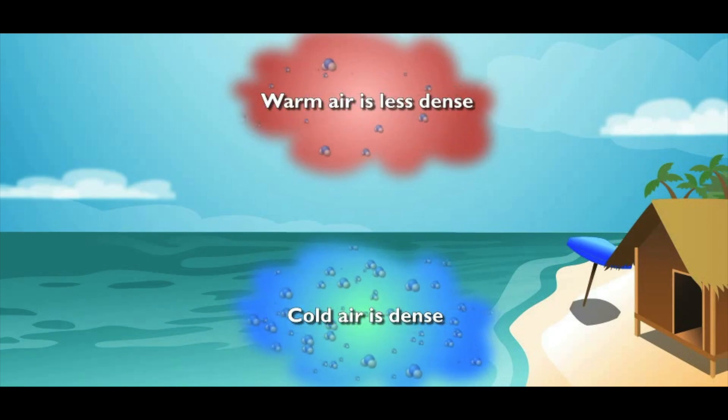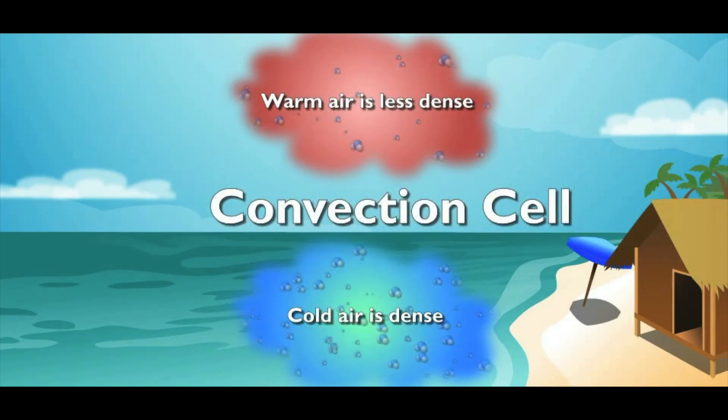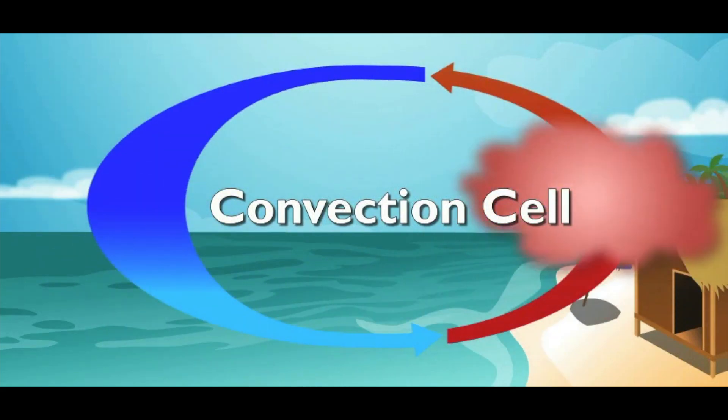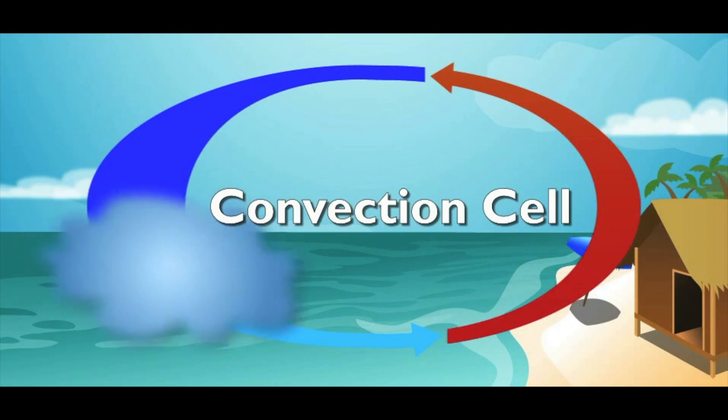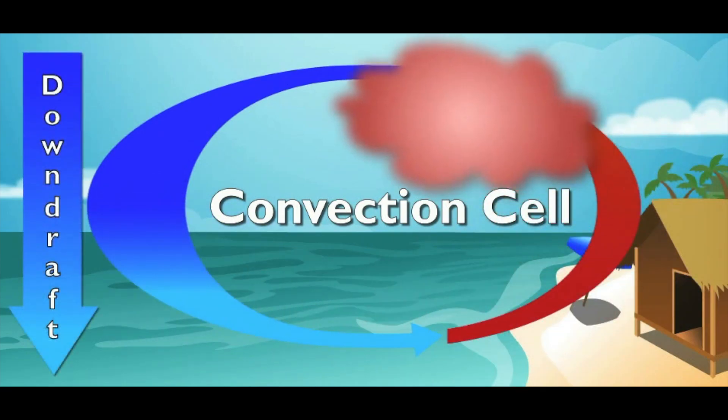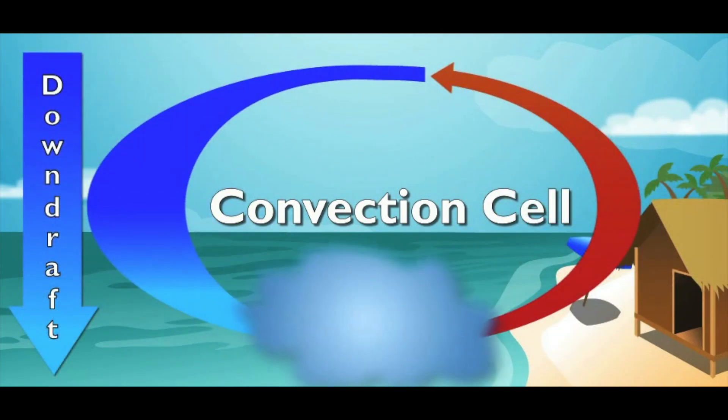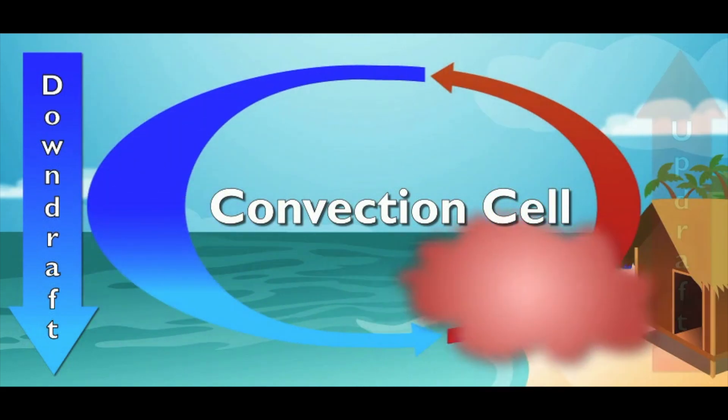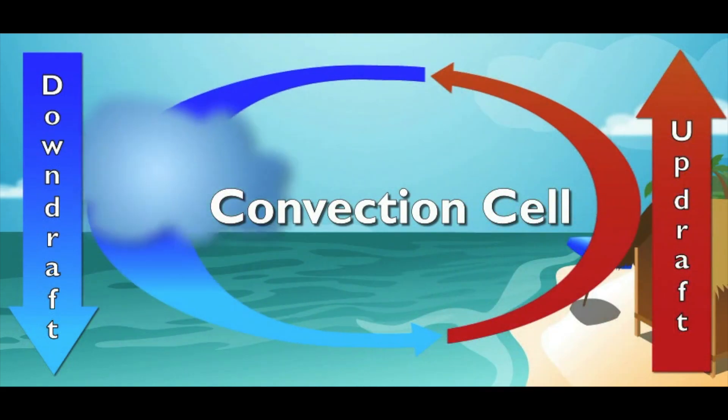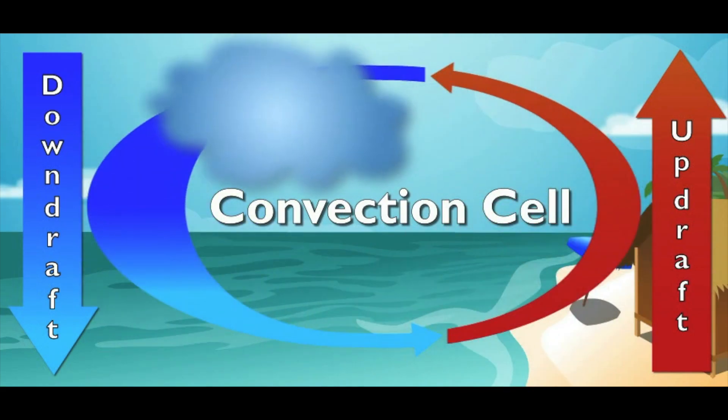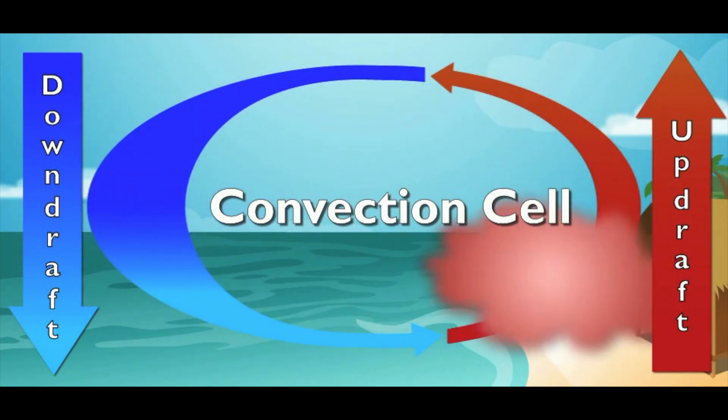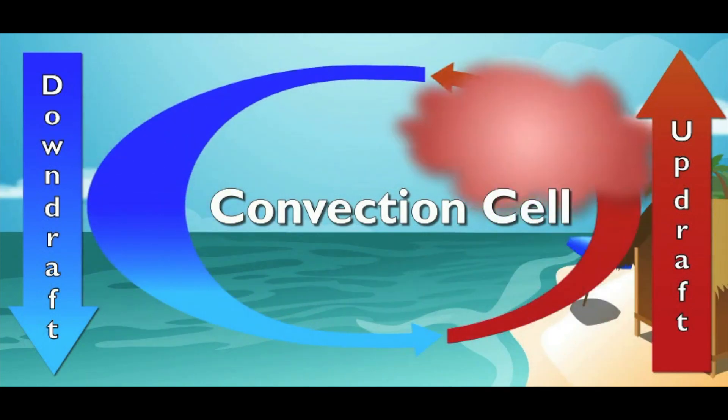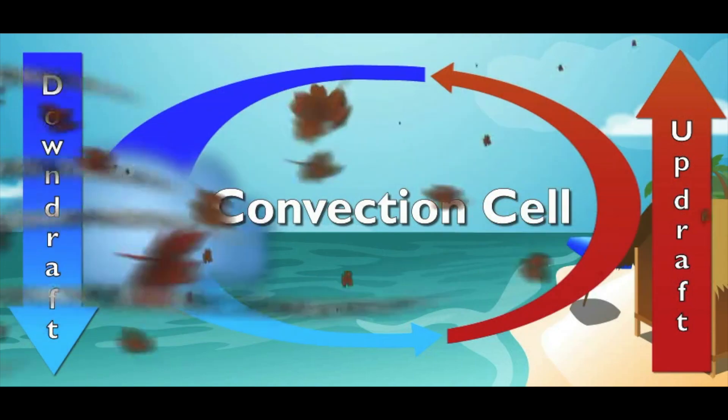The pattern of rising and falling air is called a convection cell. Convection cell? Check it out. Say we're at the beach. In a convection cell, the air over the sea cools and sinks. That's a downdraft. At the same time, the air over the land gets warmer and rises. That's an updraft. The cool, high-pressure air moves towards the land and heats up, replacing the warm air. And the warm, low-pressure air moves out to sea and cools, replacing the cool air. The movements of the air cause wind.